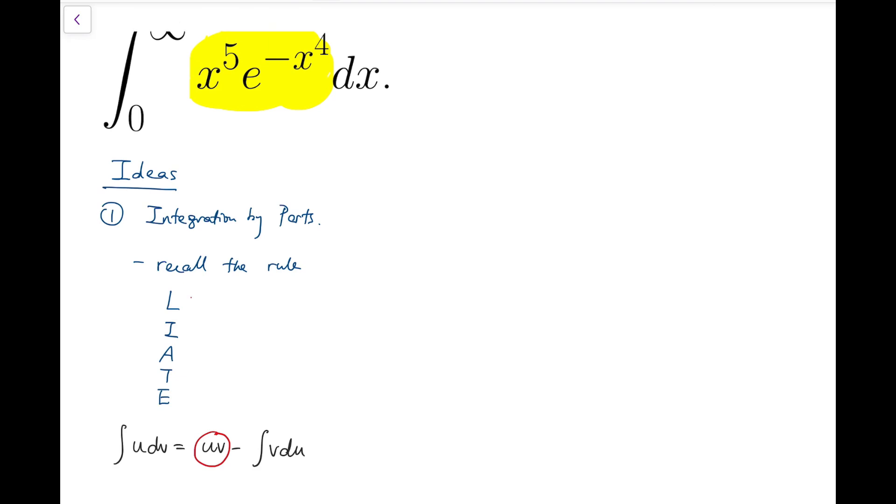For this rule, L stands for logarithm functions like natural log of x. I means inverse, for example arc sine, arc cosine. A for arithmetic, in other words polynomials like x cubed, x squared plus x, things like that. T means trigonometric functions: sine, cos, tangent, and so on. And finally, E for exponential functions like e to the x.